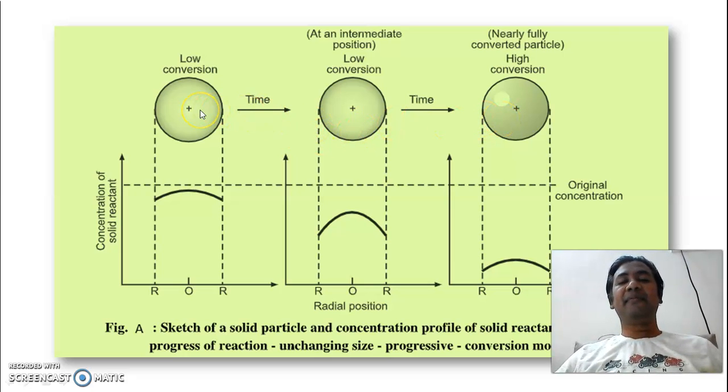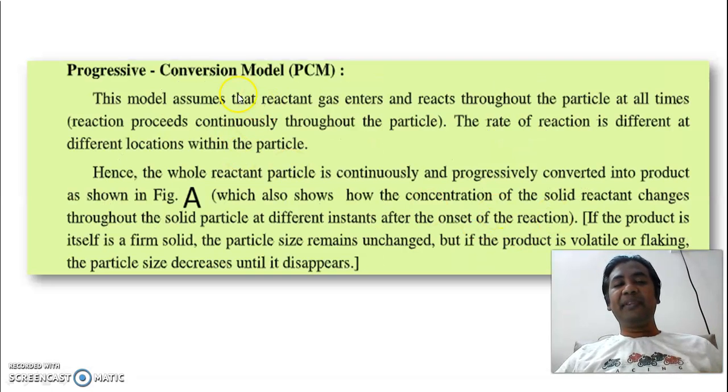Rather than with some pattern, with following some pattern, it is continuously taking, that reaction is continuously taking in a random manner. Any space, any part, any section. And that is why one cannot use this model to make rate equations of heterogeneous reactions. Because what statement we have given? This model assumes that reactant gas enter and react throughout the particle at all the time. Reaction proceeds continuously throughout the particle. The rate of reaction is different at different locations.